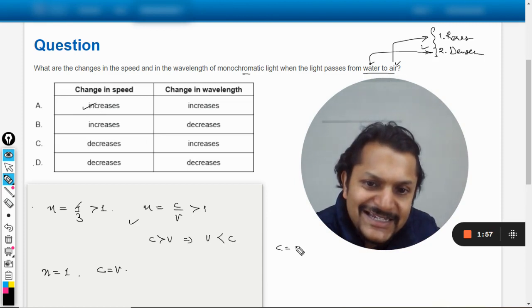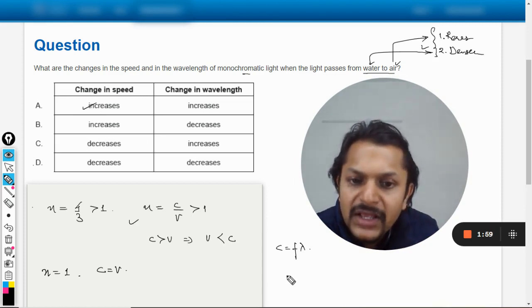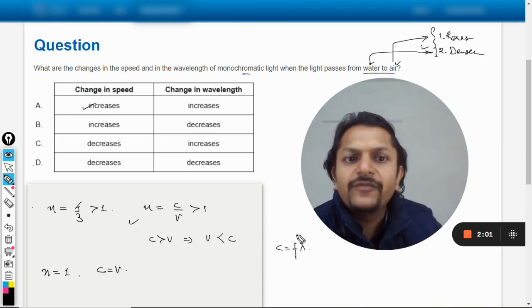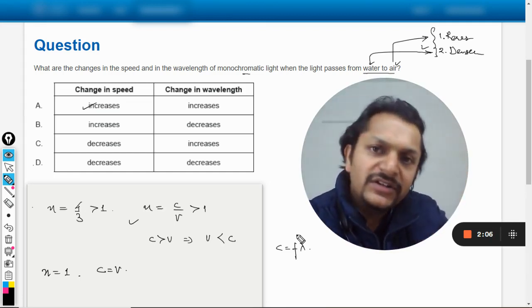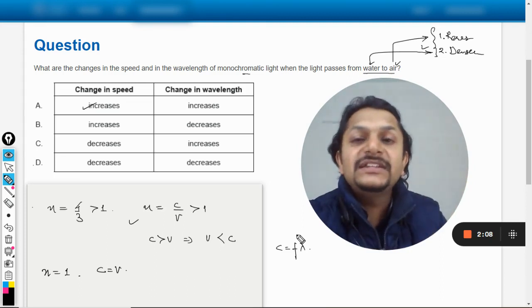Now there is this formula which is c is equal to f into lambda. And we know that whenever the light is moving from one medium into another, whether rarer to denser or denser to rarer, frequency does not change.